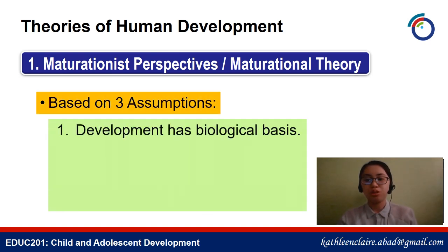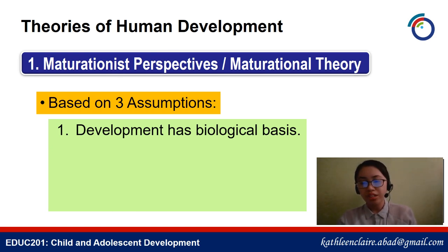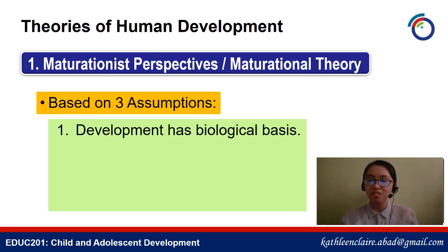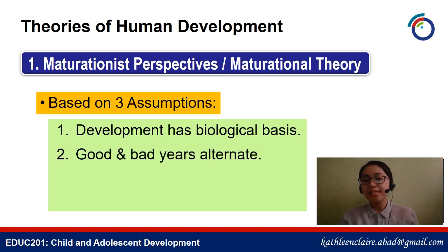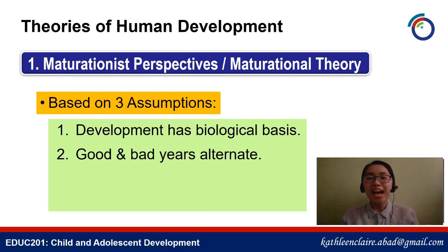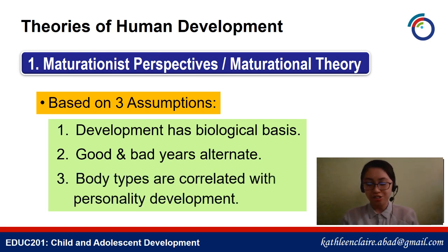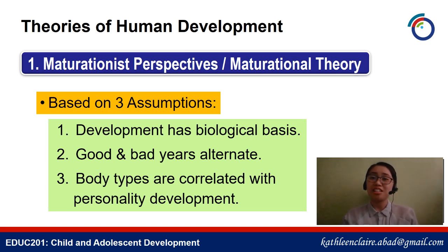This is based on three assumptions. First, development has a biological basis — a child's development is due to the genes a person has. In layman's terms, the environment or whoever guides the child has no bearing; it's purely the genes. Second, good and bad years alternate — it's part of the natural sequence of development, like the 'terrible twos' parents know about. Third, body types are correlated with personality development — if your body type is like this, then most likely your personality will be like that.